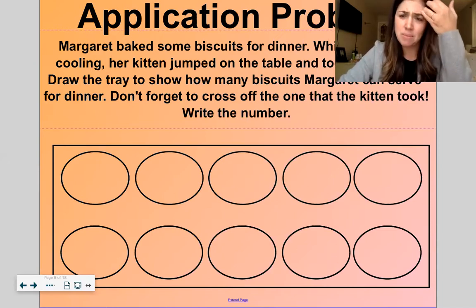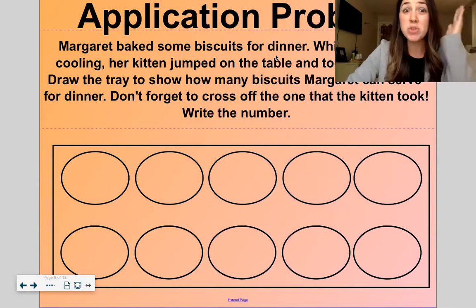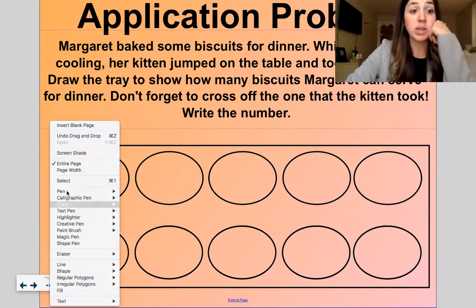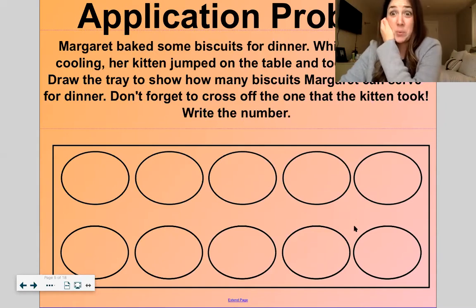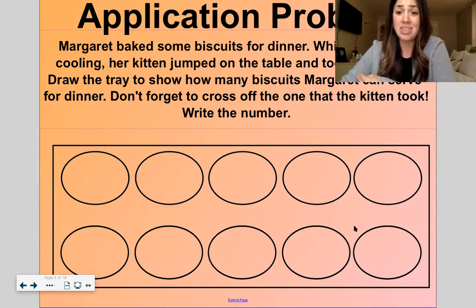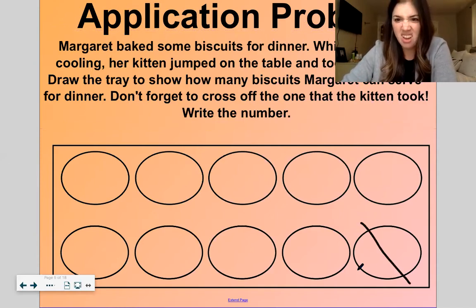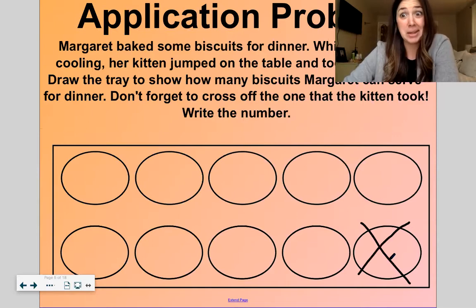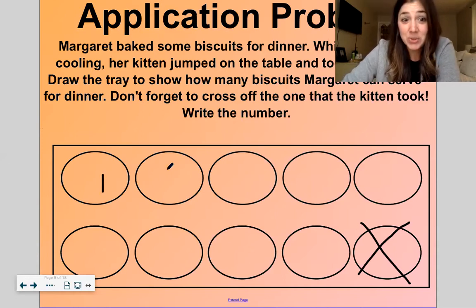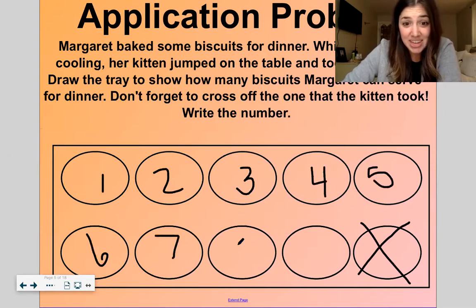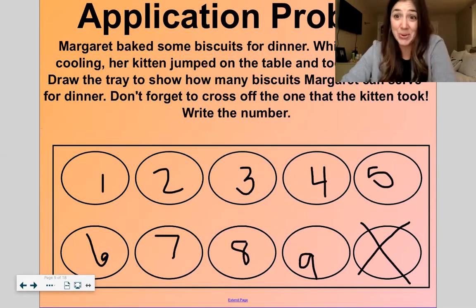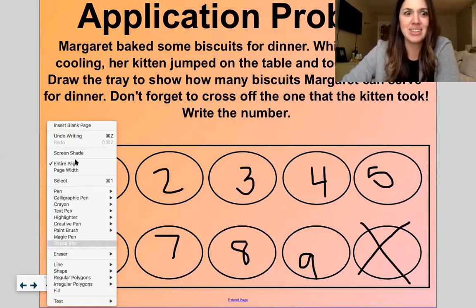So Margaret baked some biscuits for dinner. While they were cooling, her kitten jumped onto the table and ate one of them. So let's get out our pen and here's her biscuits. Let's cross off one to show which one the kitten ate. We'll cross off this one. That's the one that the kitten came up and ate on us. So now she has one, two, three, four, five, six, seven, eight, nine. She has nine total biscuits now. That's still a lot of biscuits, that looks yummy.